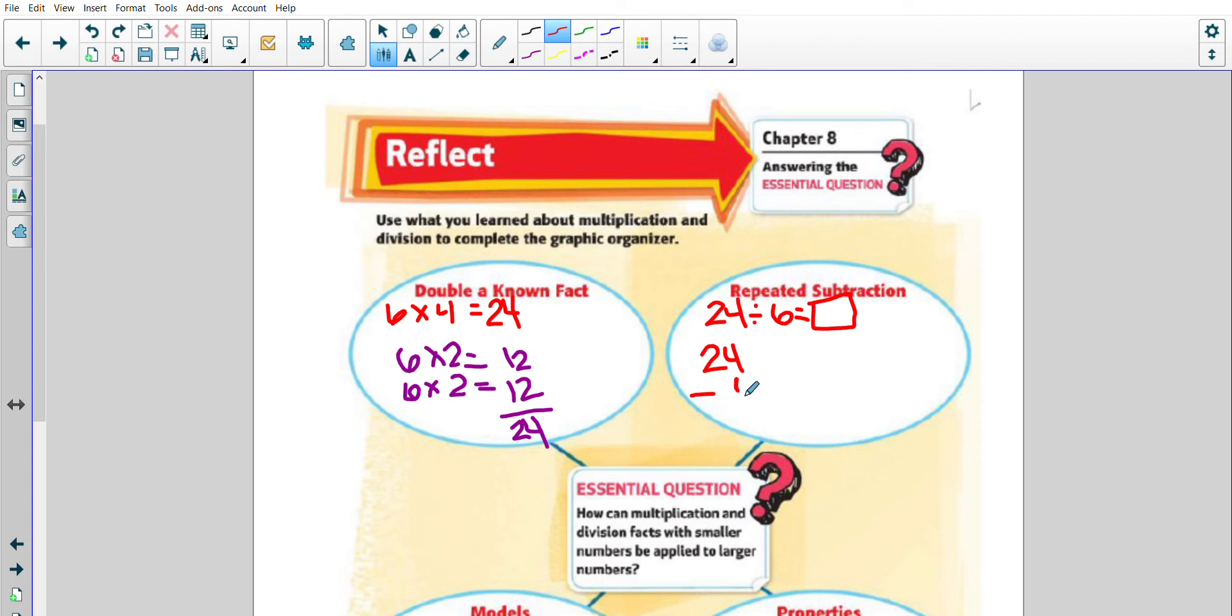So I'm going to take 24 subtract 6, again if I don't know that you go back and you regroup, that's 18, one. 18 minus 6, eight minus six is two, one minus nothing is one, so that's 12. 12 minus 6, your math fact 12 minus 6 gives you 6, and then 6 minus 6 equals 0. So I subtracted one, two, three, four, so that gives me a total of, or an answer of four.